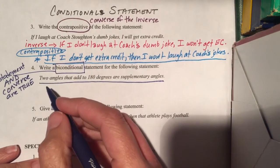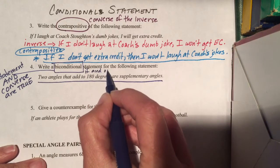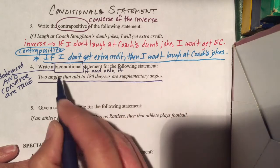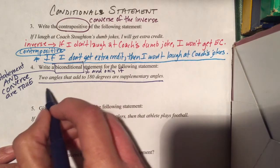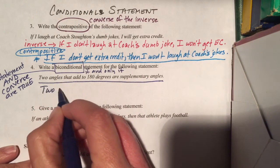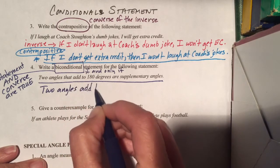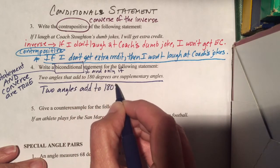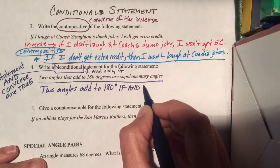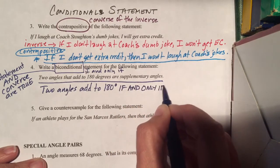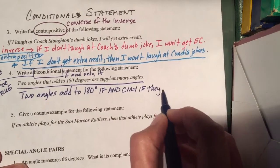The biconditional uses 'if and only if.' So I would say: two angles add to 180 degrees if and only if they are supplementary. I'm going to capitalize 'if and only if' so you can see it clearly.